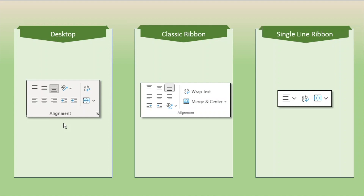The next group on the ribbon is the alignment group, and this has to do with how your text and numbers fit within the cells. As I look at the desktop version of the ribbon and then the classic ribbon for the browser version, they are basically the same. The buttons are in a slightly different order, but for example the ABC here is wrapped text — we can look at the icon and match it with the icon and text over here. So basically they are exactly the same, just in a different placement.